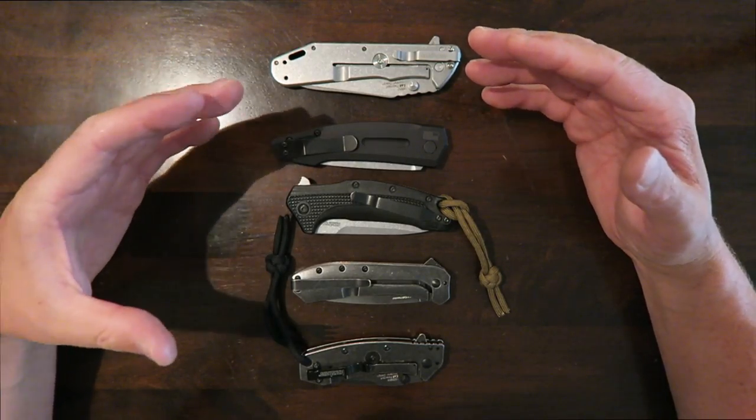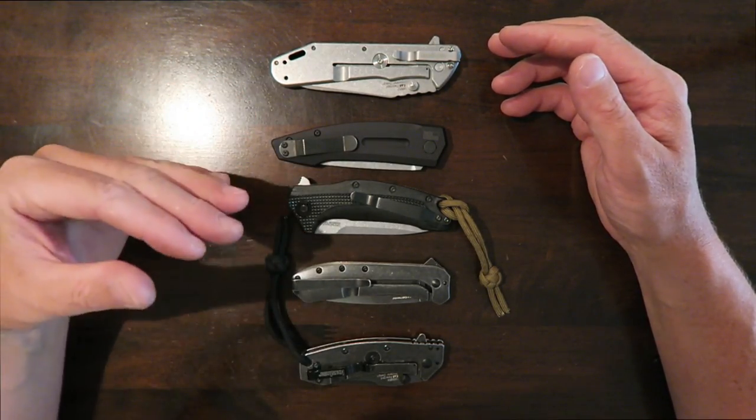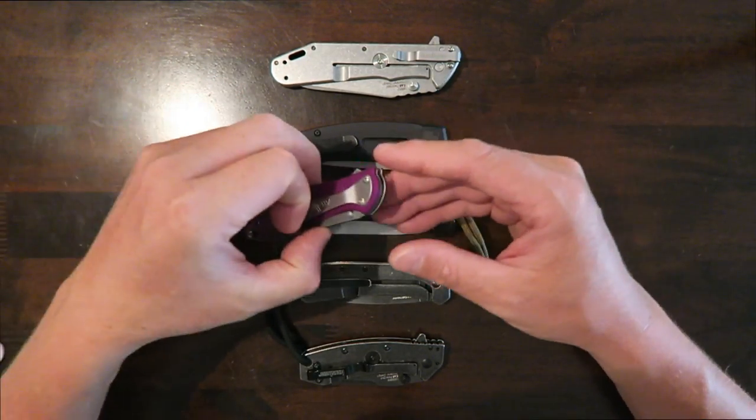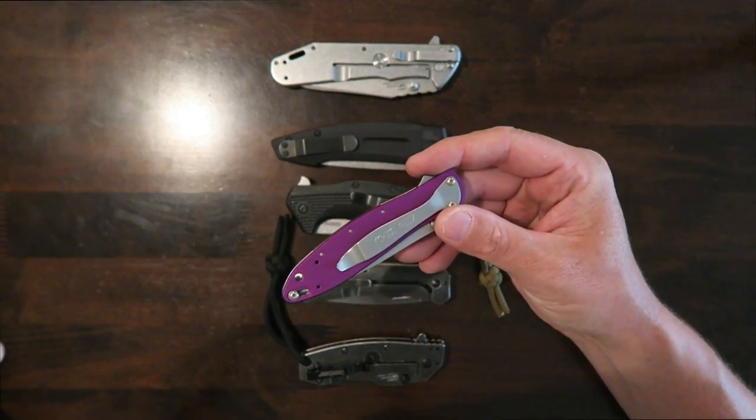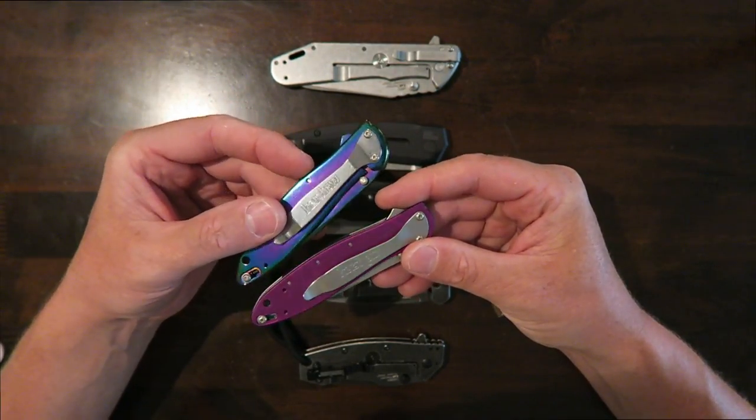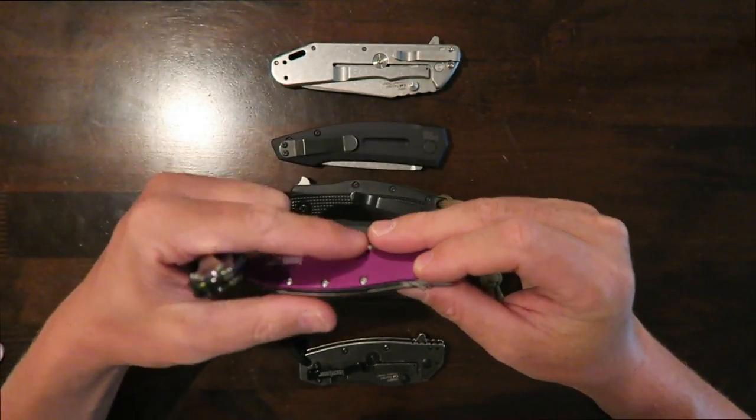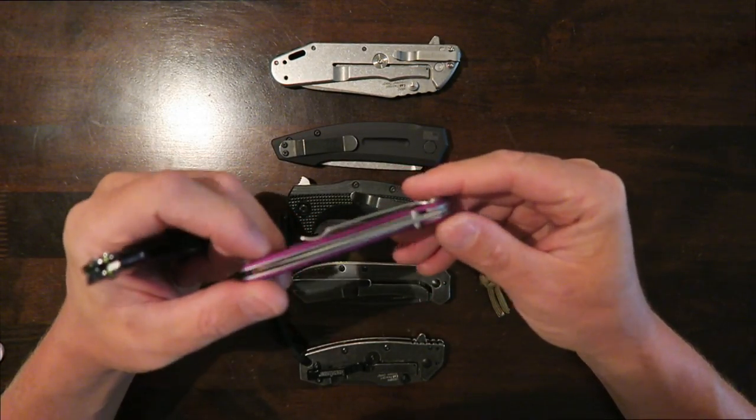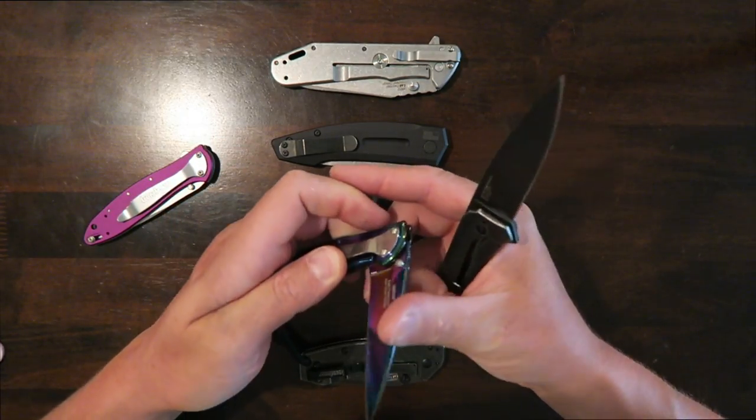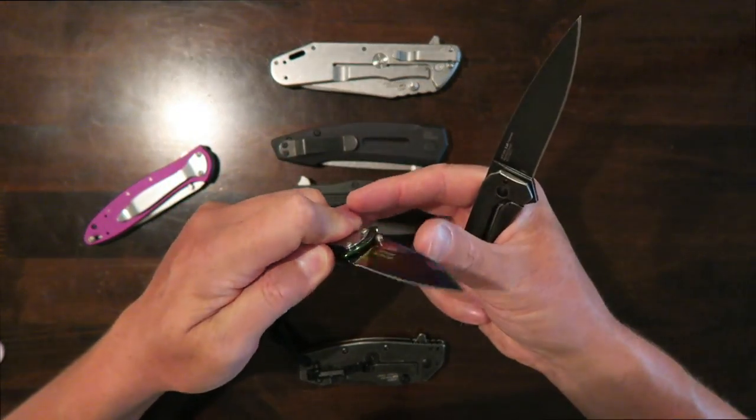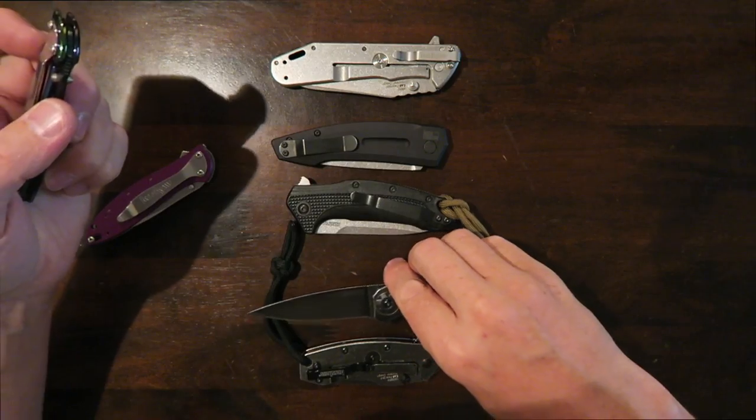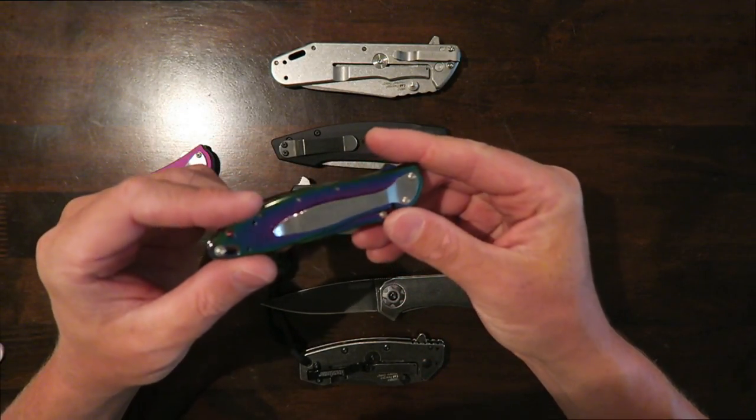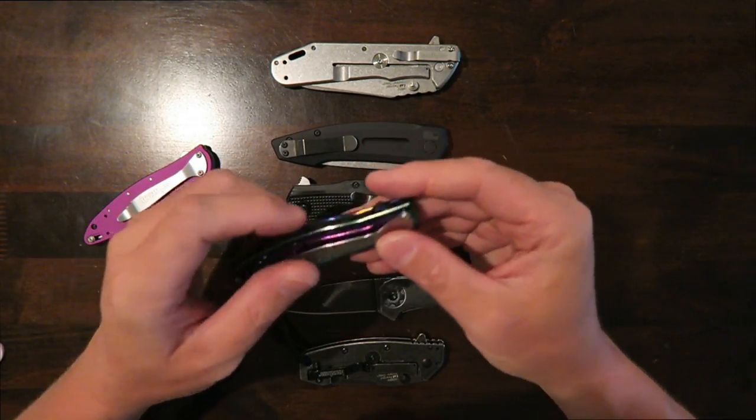So another great EDC knife that I don't have that would certainly fit into this collection is the Kershaw Leak. Now Kristen has several different leaks and she's done a video on these. She's got the aluminum version. It comes in a colored aluminum version. This is a liner lock. The leak is exceptionally smooth especially with this titanium rainbow version here. Exceptionally smooth. This one is actually a frame lock.